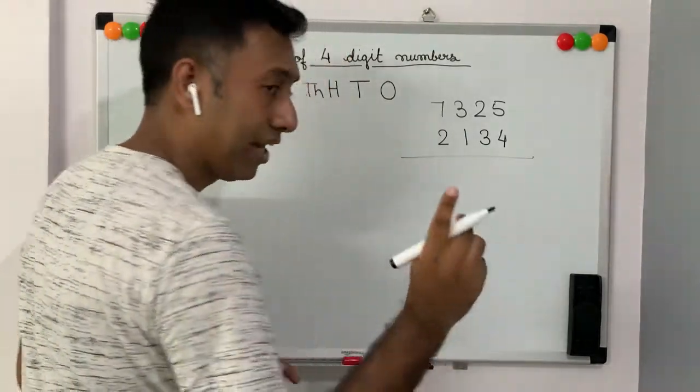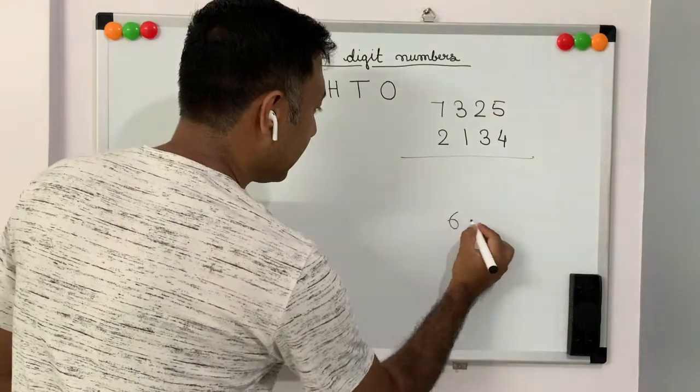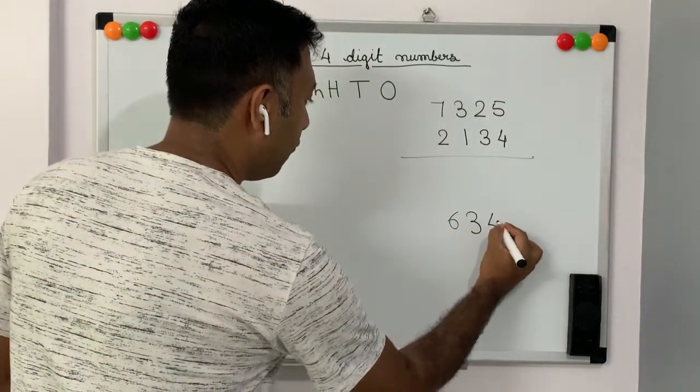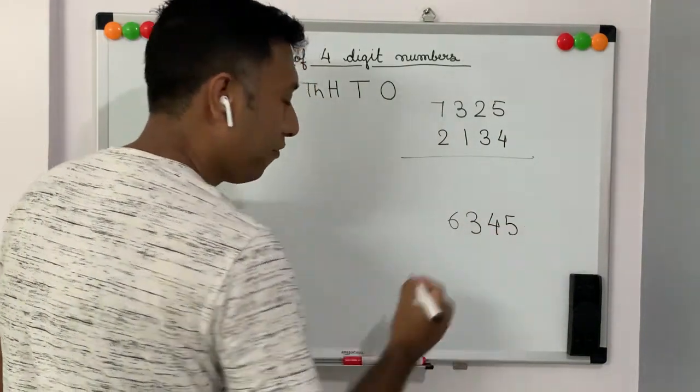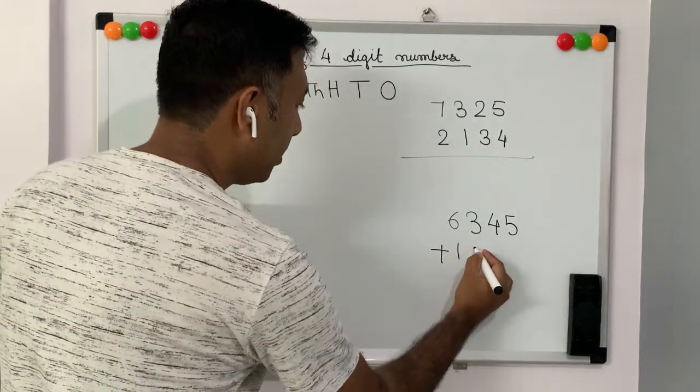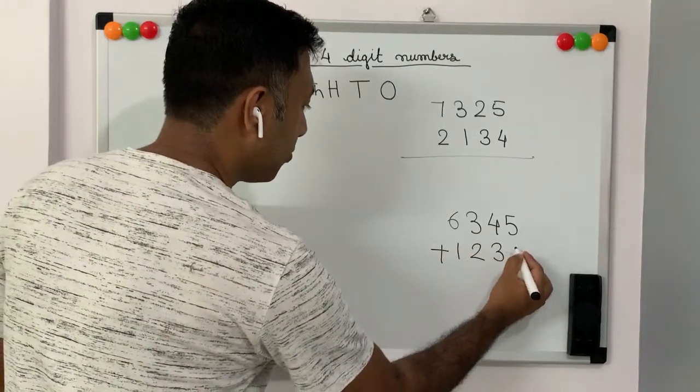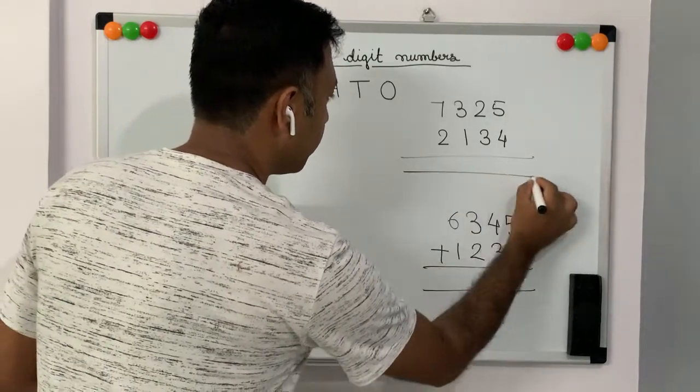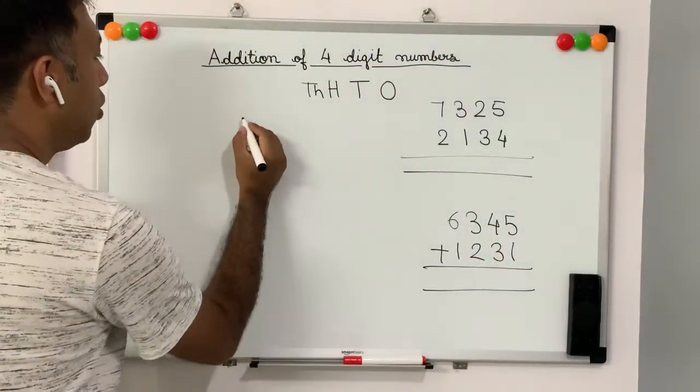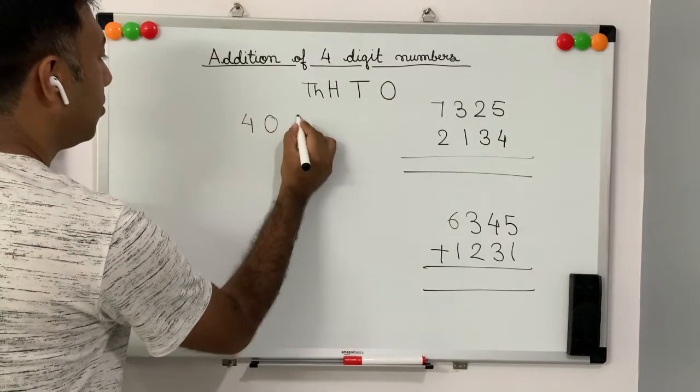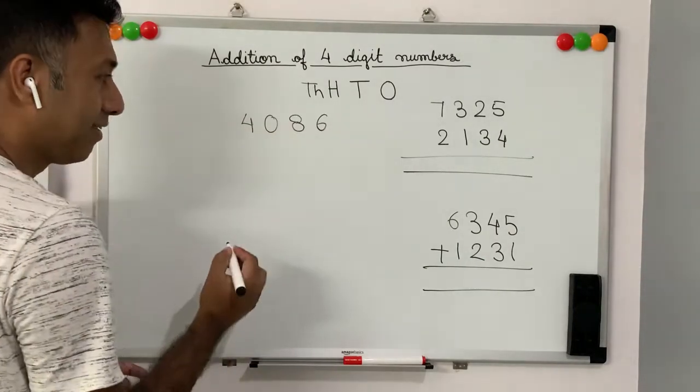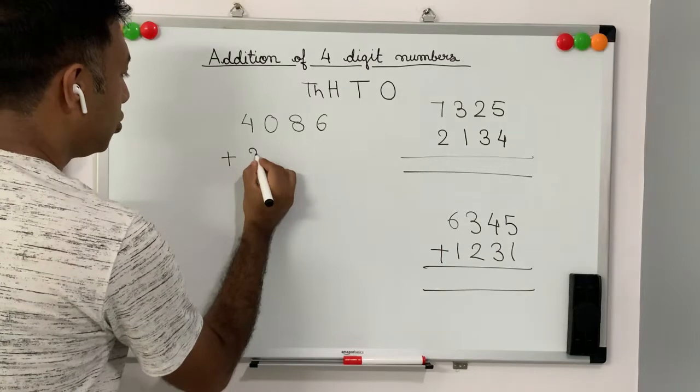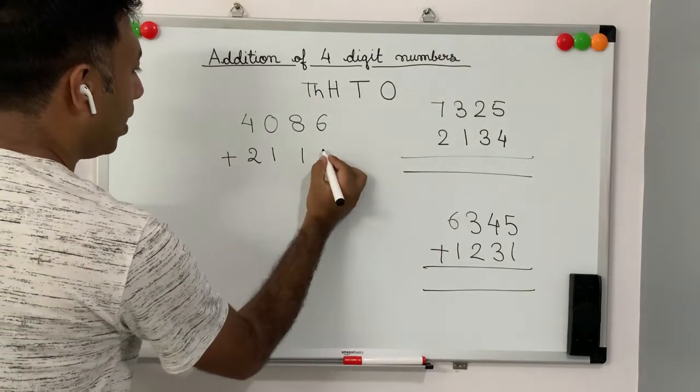Now, let's try another one: 1, 2, 3, 4, 5 plus 1, 2, 3, 1. Let's try one more: 4, 4, 0, 8, 6 plus 2, 1, 1, 3.